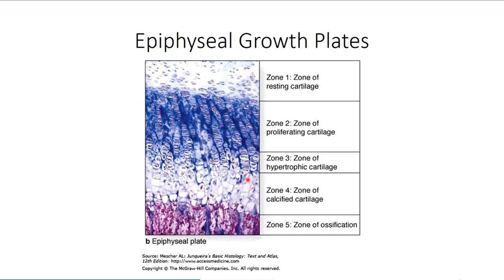Ultimately, these cells rupture, releasing alkaline phosphatases that lead to calcification, and the cells join the calcified cartilage zone. Eventually, osteoclasts bore through this region and osteoblasts lay down woven bone on top of the remnants of the cartilage matrix. The cell is now considered to be part of the ossification zone and will ultimately be remodeled into secondary bone through the formation of osteons.